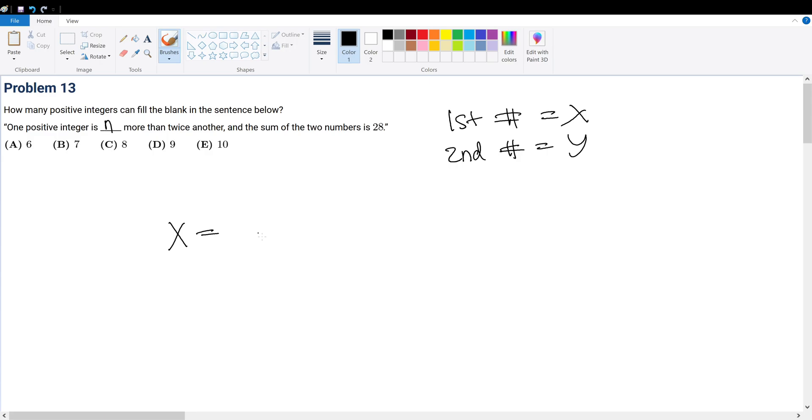x is blank—well, blank is not really helpful, so let's call this n. So x is n more than twice the other. The other one would be y, so x = n + 2y. And the sum of the two numbers, x + y, is equal to 28.